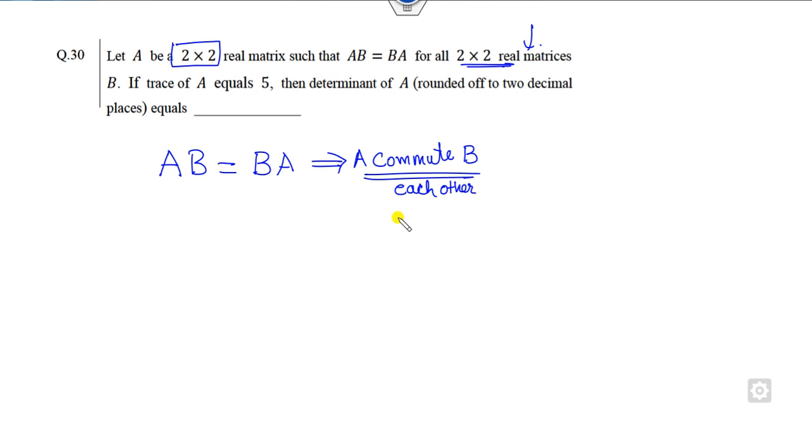So what is the meaning of that? Whenever A and B are two matrices which are commute to each other, then what is the meaning of A? A is always a scalar matrix. That is the meaning of this. What is the meaning of the scalar matrix? That is A is nothing but k times I.